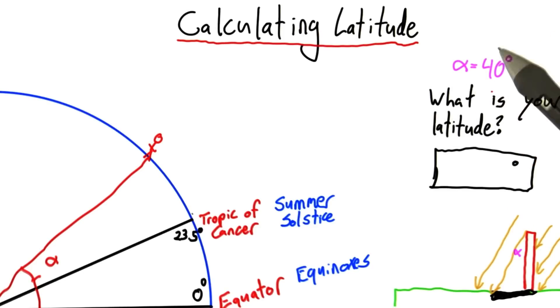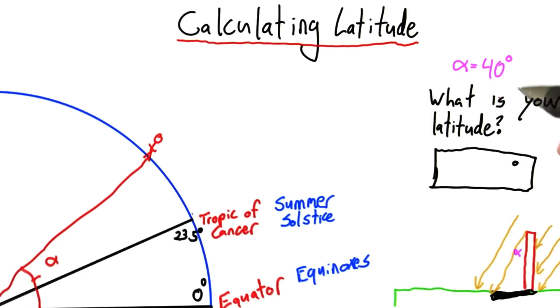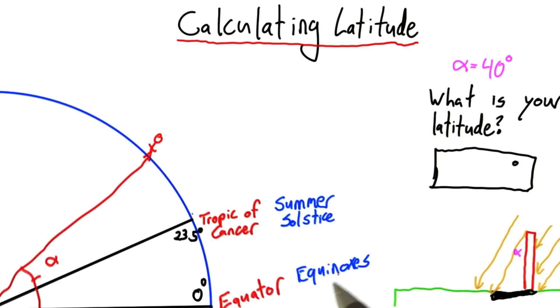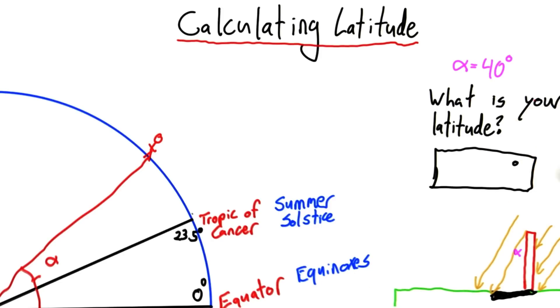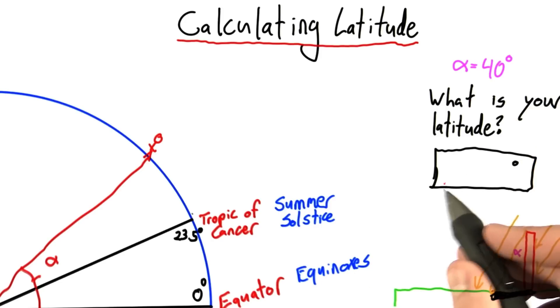So I want you to tell me, for this measured angle of 40 degrees — and remember, this is when the sun is highest in the sky, and the sun is directly overhead on the equator, so it's one of the equinoxes — what is your latitude? Give your answer in degrees.